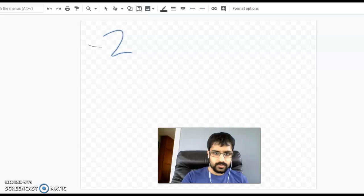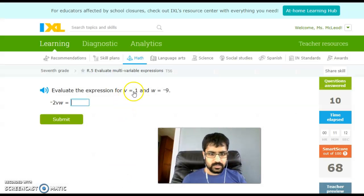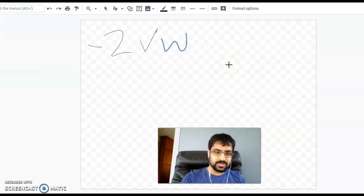So I'm going to start off with negative 2 VW. Negative 2 VW. Where V is 1 and W is negative 9. I love that V is 1 because there's so little I have to do with it. Since they're all next to each other, I know that I'm just multiplying.